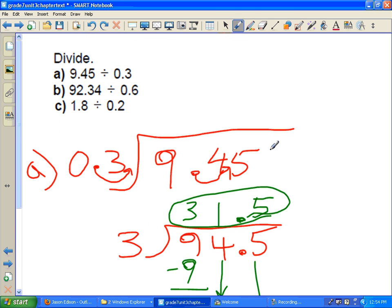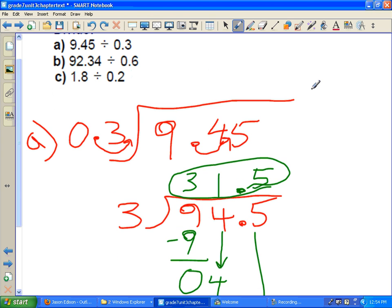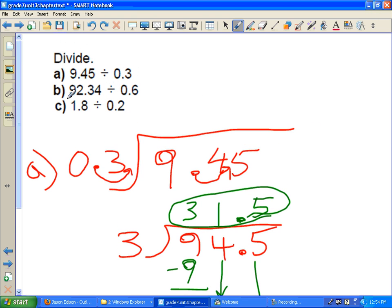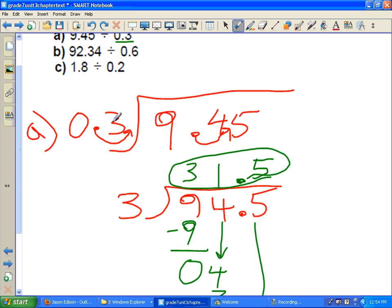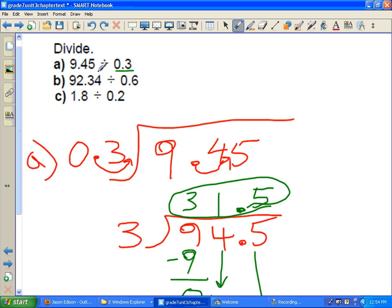And again, we could always estimate first. What will 9.45 divided by 0.3 be? Well, it's slightly less than 1. So you know it's going to be more than 9 times. So it's probably not 315 times, but it should work out pretty close to one-third times that.